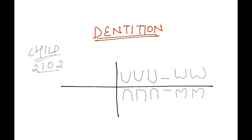Today we will see an important topic in FMT which is dentition. There's nothing much to understand here, it's very theoretical and you have to memorize it, so let's simplify it. The dentition formula for a child is 2102 — that is two incisors, one canine, no premolar, and two molars written for one side.